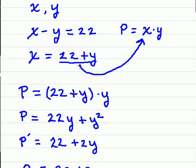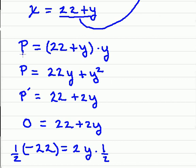Then we're going to take this and substitute it directly into the objective function. I've rewritten it, so P is equal to 22 plus y times y.